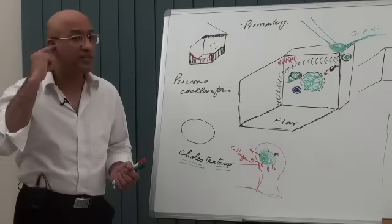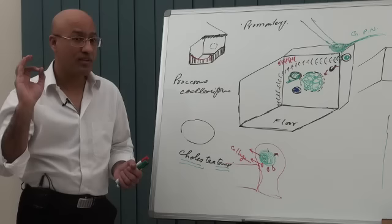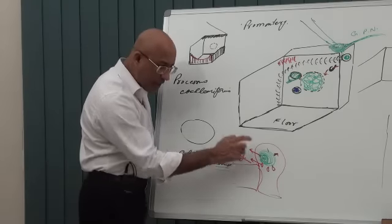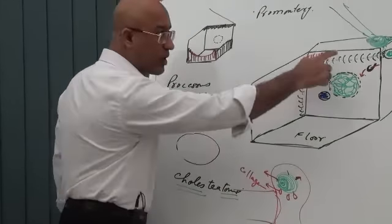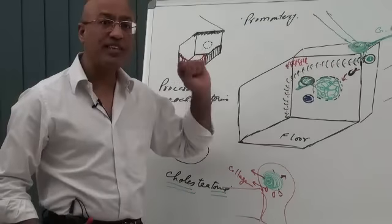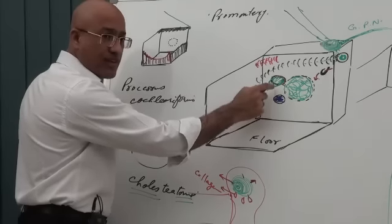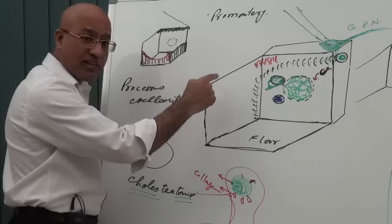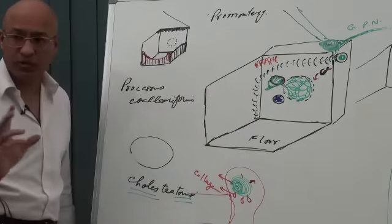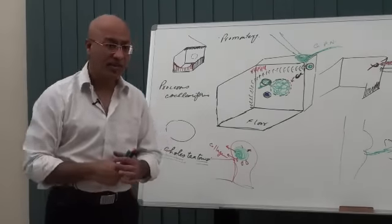Cholesteatoma can perforate the tympanic membrane — at the pars flaccida — posterosuperior perforations with scanty discharge and a very offensive smell. If cholesteatoma approaches the medial wall, it can damage the oval window and stapes, even destroy the incus and malleus. If the ossicular chain is damaged, sound energy from the tympanic membrane cannot be properly conducted to the inner ear, so conductive deafness can occur.